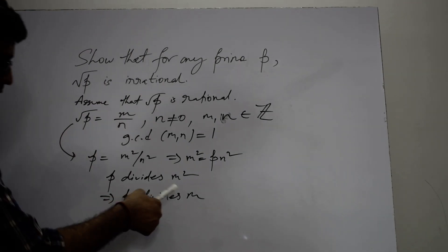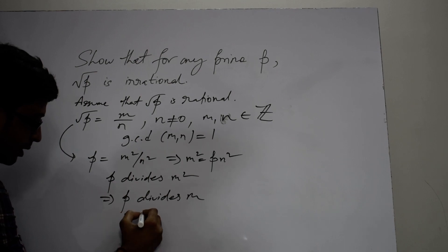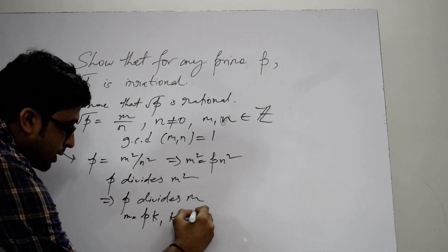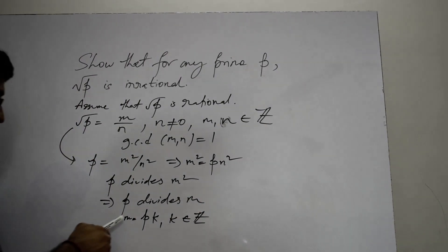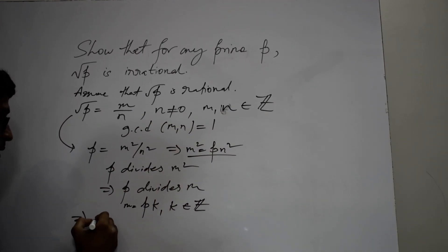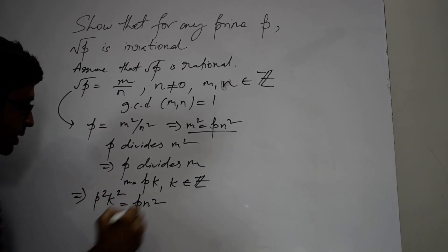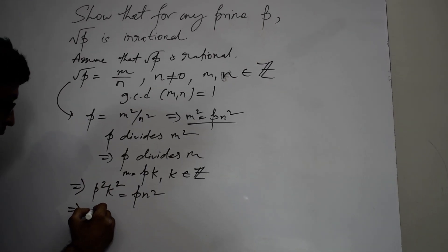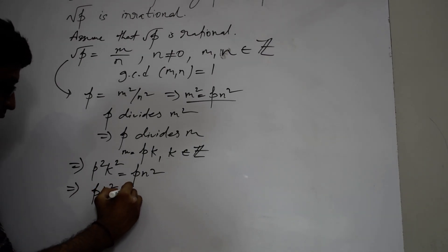Coming back to the solution of the problem: if p divides m, it means that m can be written in the form p times k, where k is any integer different from 0. Now if we substitute the value of m in this equation, this will become p squared k squared equals p times n squared. Cancelling p on both sides, we get p k squared equals n squared.